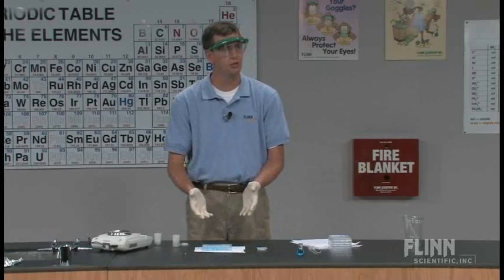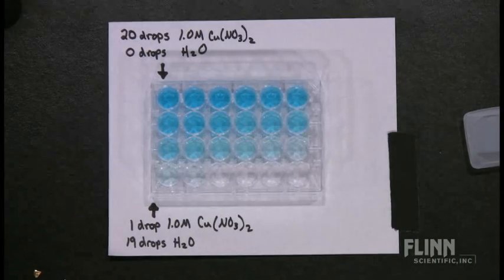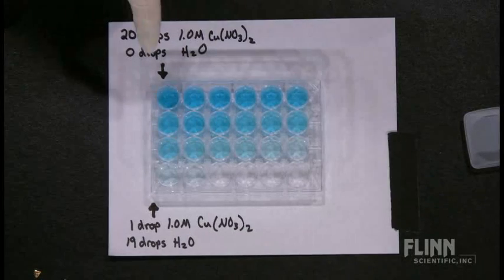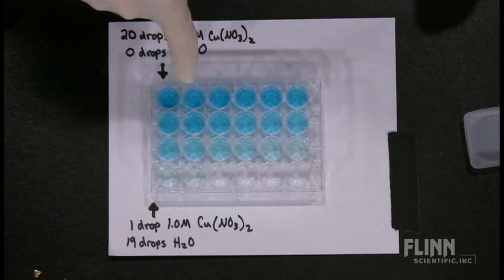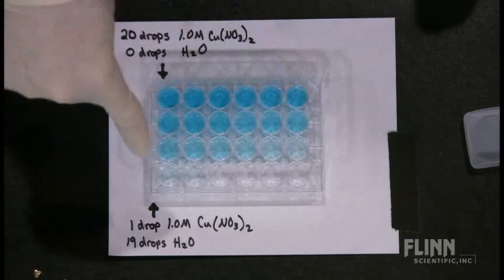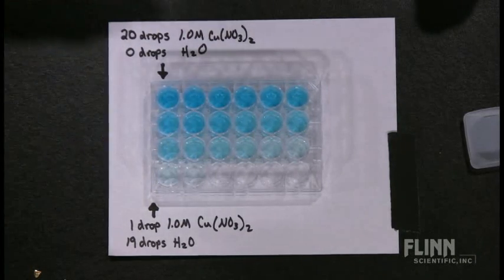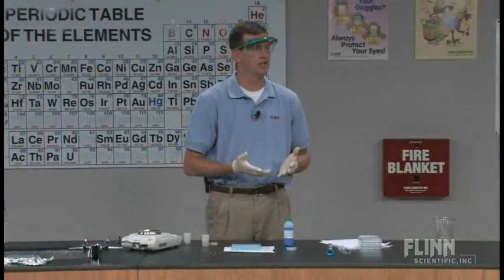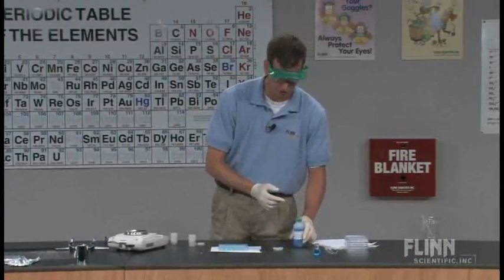I've done a serial dilution of one molar copper nitrate. I put 20 drops of copper nitrate with no water in the first well, then 19 drops with one drop water, 18 with 2, all the way down to one drop of copper nitrate with 19 drops of water. That's my set of standards to compare my unknown solution to.